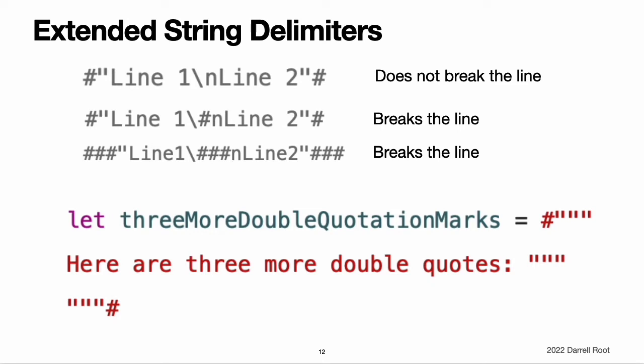String literals created using extended delimiters can also be multi-line string literals. You can use extended delimiters to include the triple quotation mark text in a multi-line string, overriding the default behavior that ends the literal.